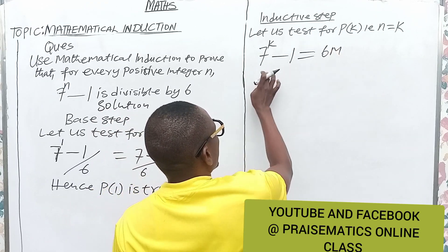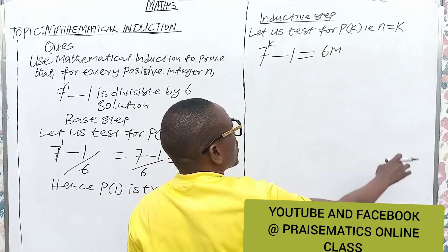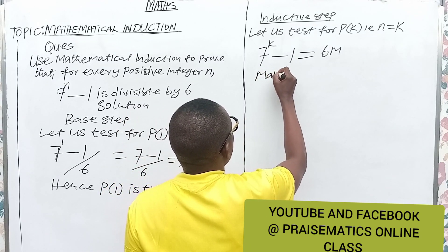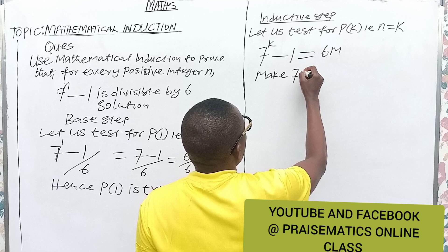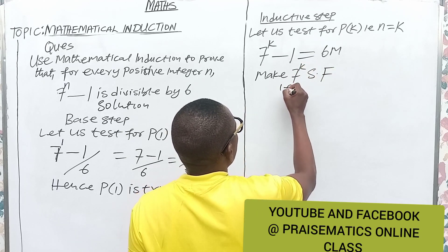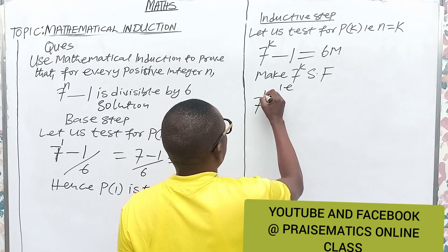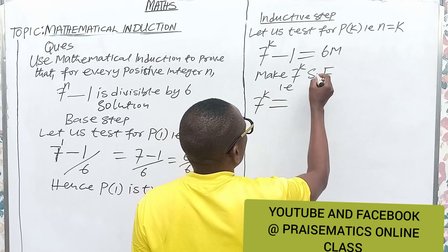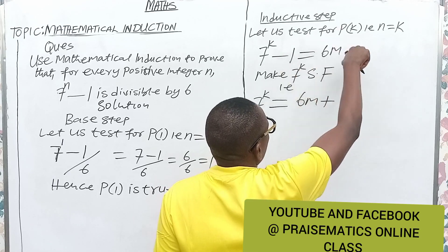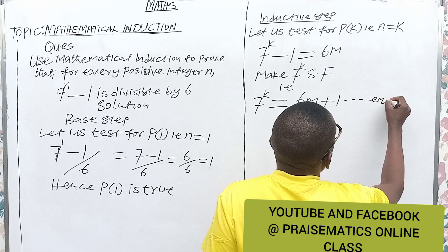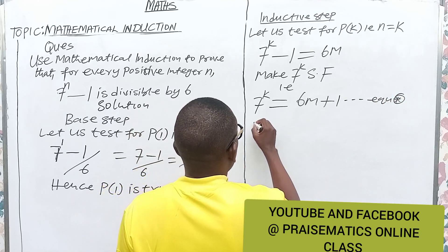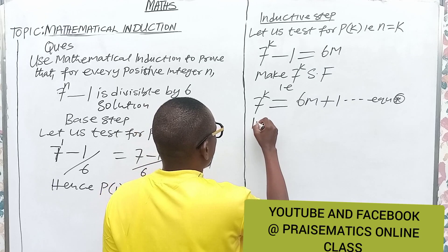Since it is divisible by 6, let's make 7 raised to power k the subject of the formula. We have 7 raised to power k equals 6m plus 1. We call this equation star.